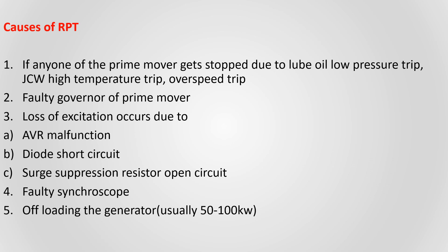Offloading the generator is usually done at 50 to 100 kilowatt. During idle condition, fuel is still being admitted to the engine — that mechanical power of around 100 kilowatt is used to counter the friction and windage losses. If you offload at 0 kilowatt, reverse power flow will occur. That's why we offload the generator at 50 to 100 kilowatt.